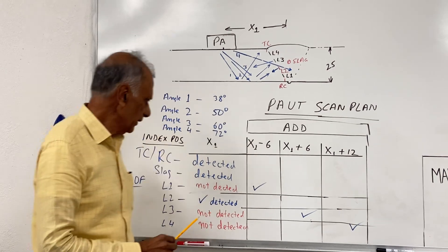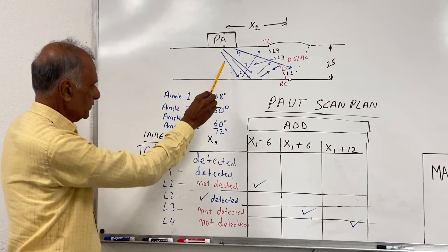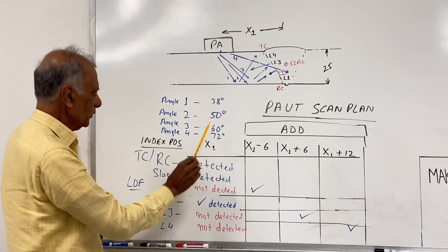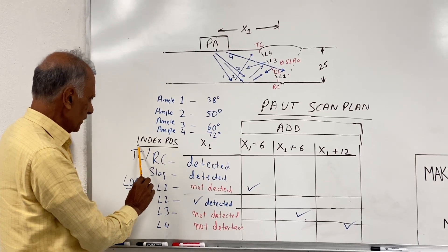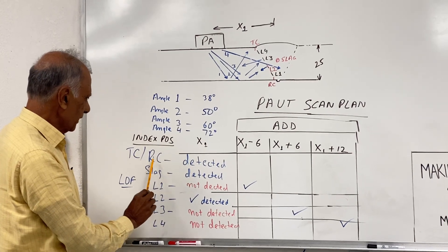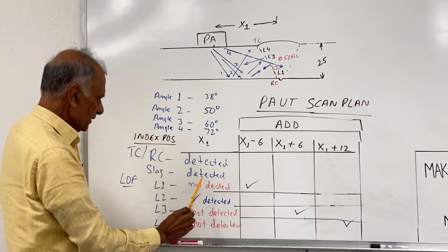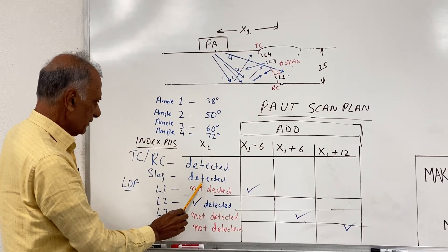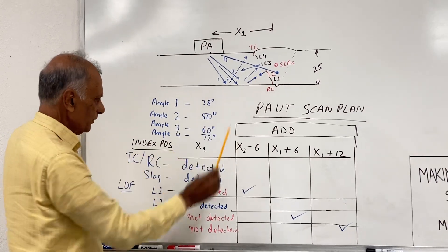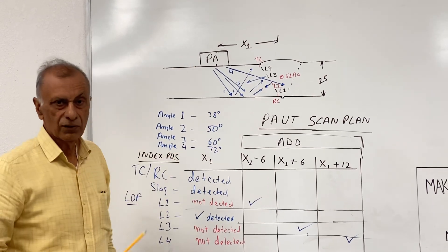As I'm showing here now in this table, these are the angles which I've shown here, angle 1, 2, 3, 4, which are 38, 50, 60, and 72. And for the index positions X1, I can see the toe crack and the root crack are detected at this index position X1. The slag is detected, L2 is detected, the lack of fusion is detected L2. However, L1, L3, and L4 are not detected.